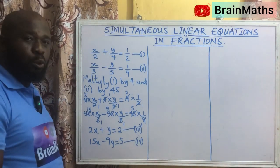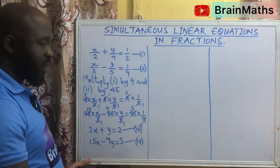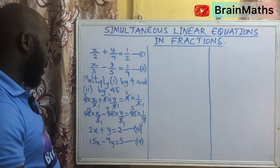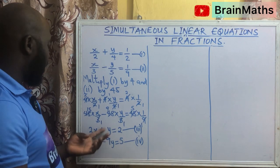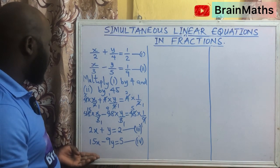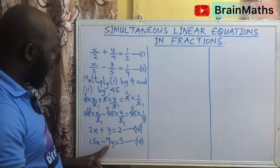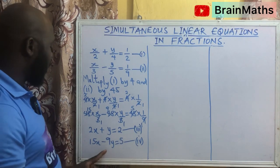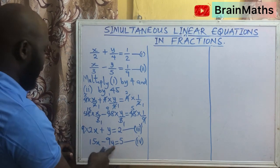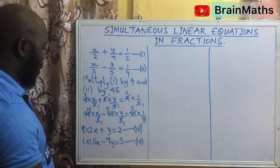Now the next thing we have to do is to determine which of the two variables we are eliminating or substituting for. So let's use elimination method here. If you look at y, their coefficients are not the same. If you look at x as well, their coefficients are also not the same. So we have to multiply equation 3 by the coefficient of y in equation 4, which is 9, and multiply equation 4 by the coefficient of y in equation 3, which is 1.